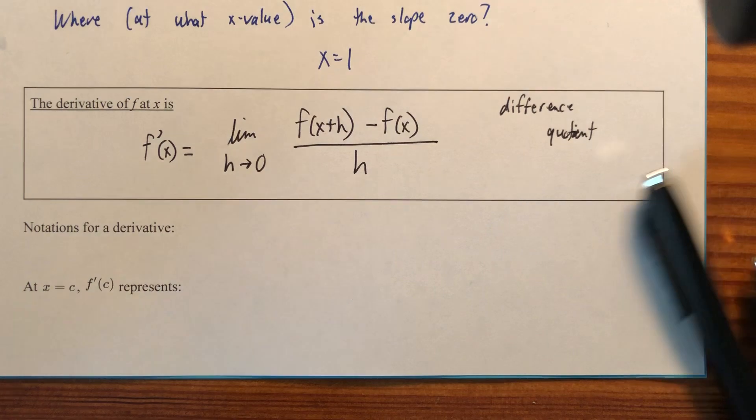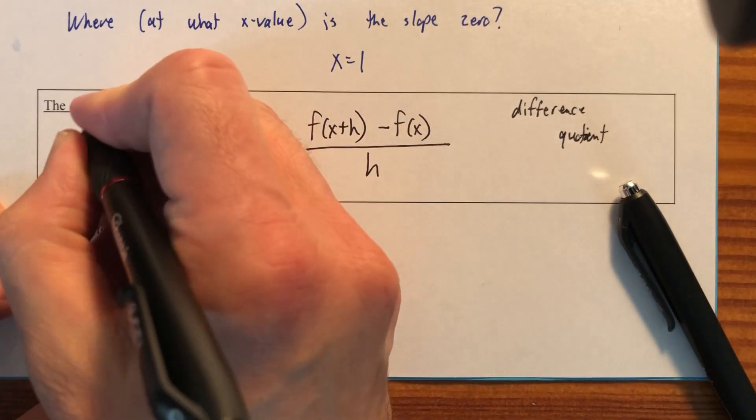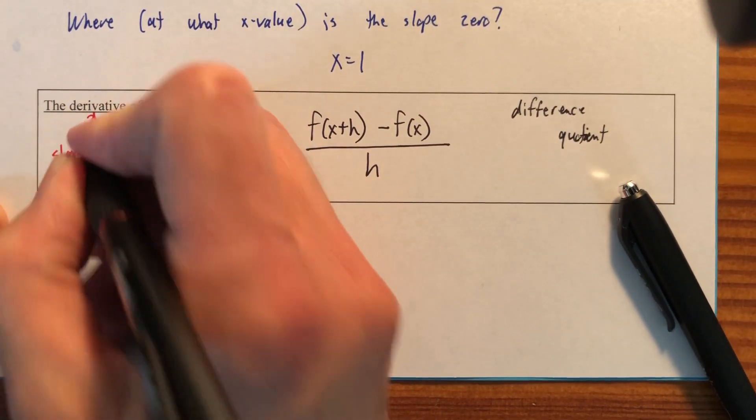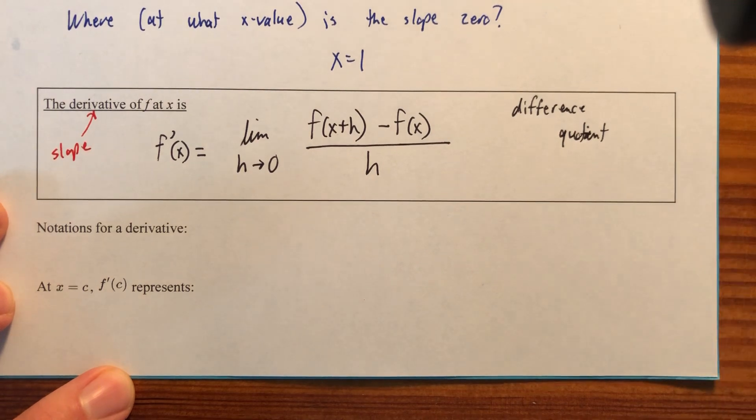What does derivative mean? Well, a derivative is just a fancy way of saying slope. That's it. It's just slope.